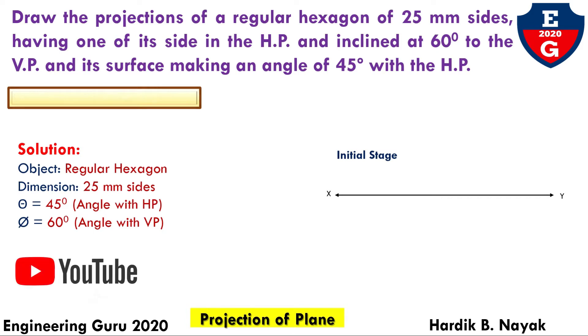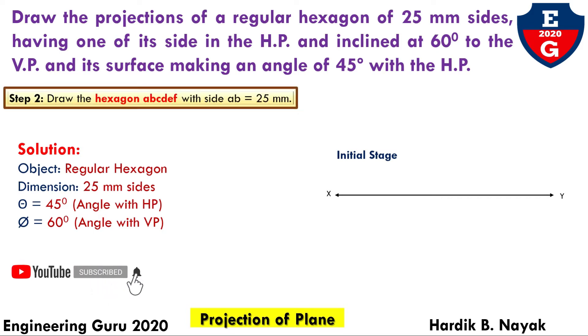Step number two: this will be the initial stage. Draw the hexagon with the side AB equal to 25 mm. Here, the condition is that the position of one side of the hexagon is in the HP, so we will be beginning with the top view. Draw all the lines of the hexagon at 60 degrees with the help of a protractor and name the points as ABCDEF. So, this is the regular hexagon resting on the HP.